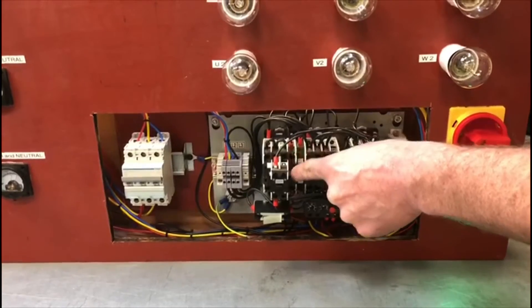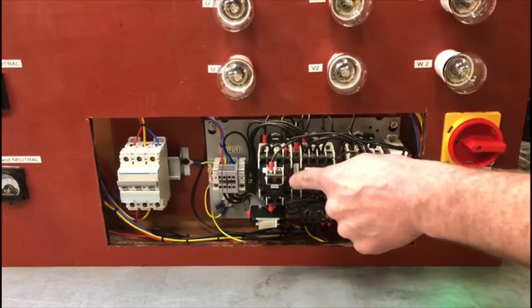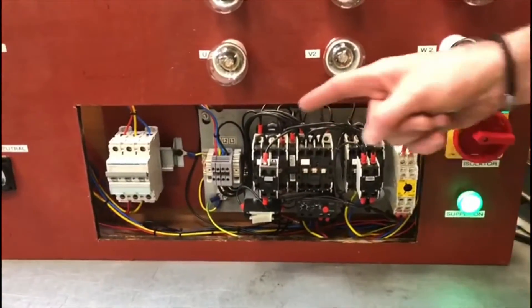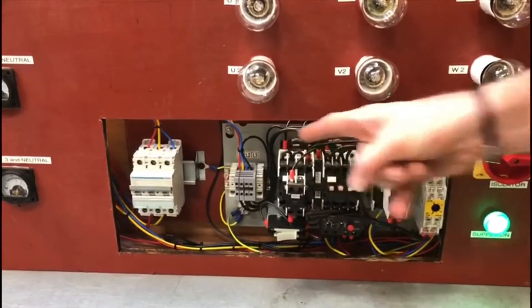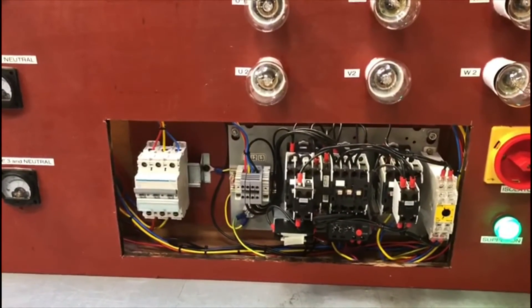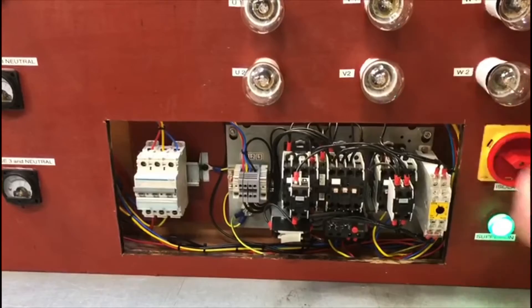As soon as this one pulls in, this one on the left-hand side is also pulled in, and that's the star contactor. You can tell it's the star contactor simply by looking at the top of it. You can see how the top has been linked out.